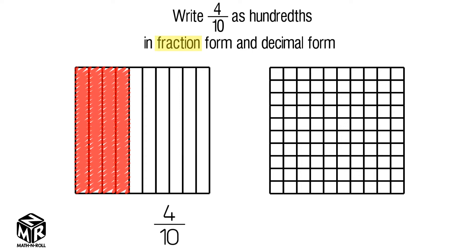Let's take the same exact model and divide it into 100 equal parts, instead of 10. Now let's shade 4 columns again.